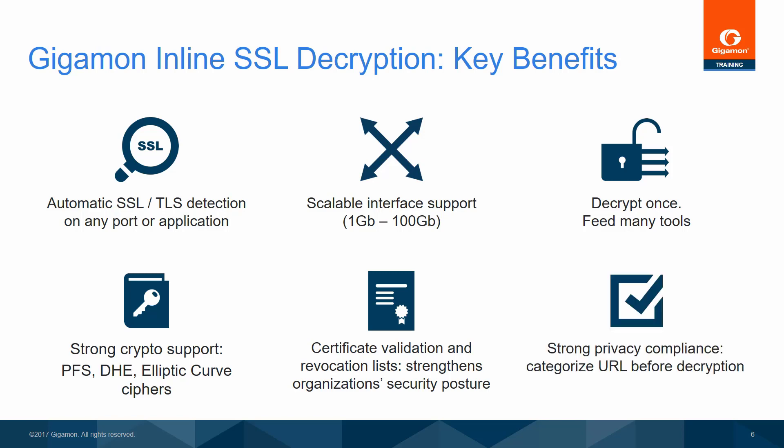Inline SSL decryption also supports strong privacy compliance. The policy settings determine which traffic is decrypted. For instance, with URL categorization, you can have all traffic decrypted except for URLs with sensitive encrypted information, such as health care or financial information. It also supports whitelisting or blacklisting.